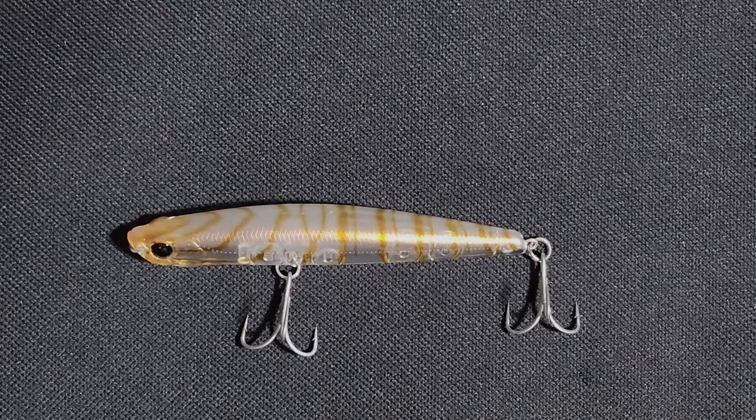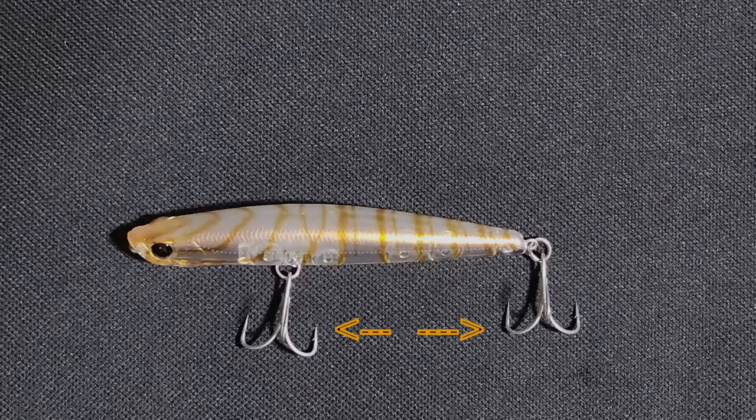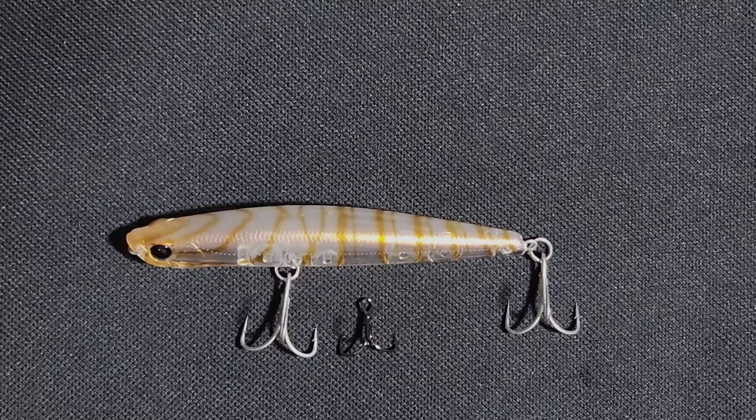Today we're going to start with a 95 millimeter sugar pen and first thing is to remove those much too large treble hooks and replace the front one with a smaller size 10 treble and the rear with a set of assists.